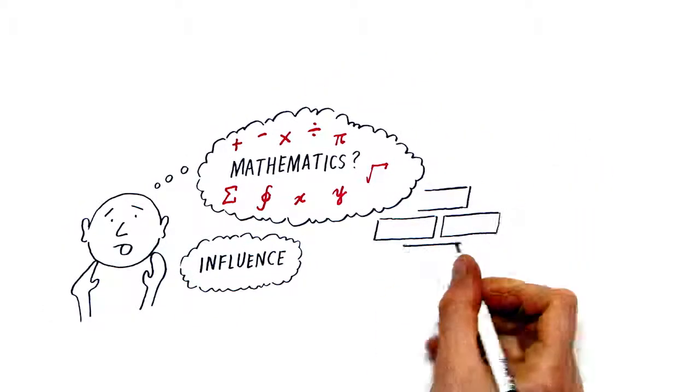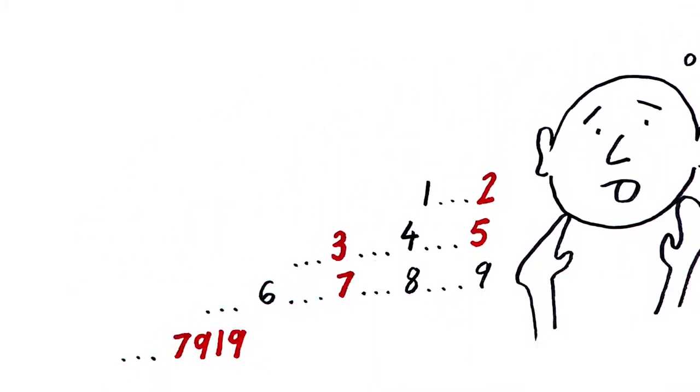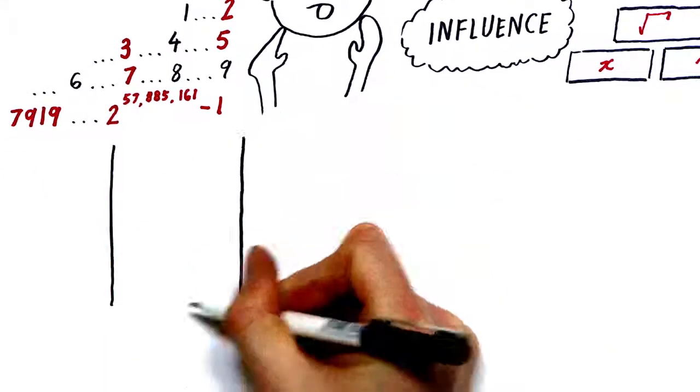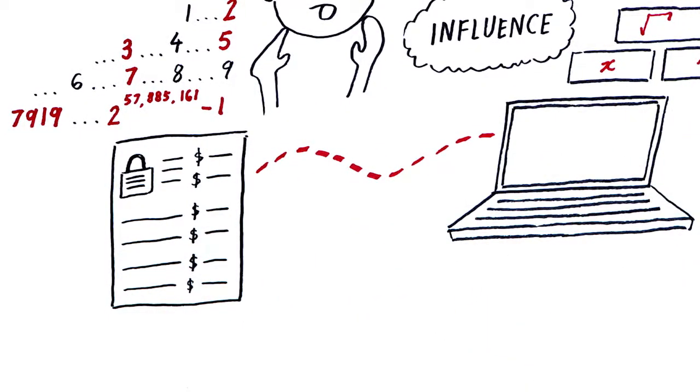In many ways, mathematics is the very foundation of modern society. For example, the study of prime numbers over many centuries resulted in the encryption technologies we use to make banking transactions from home or work.